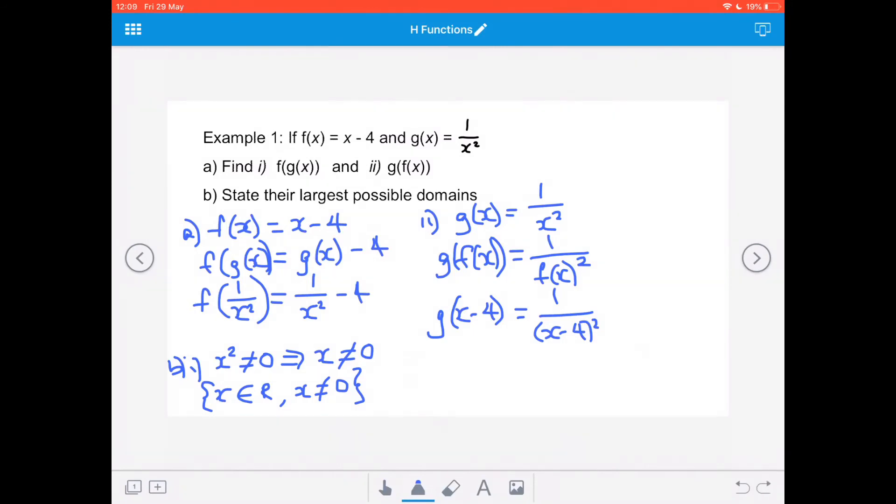In b, part 2, it's the x minus 4 all squared bracket that cannot equal 0. So therefore, x cannot equal 4. So again, x is going to be a member of the set of all real numbers, but x cannot have a value of 4.